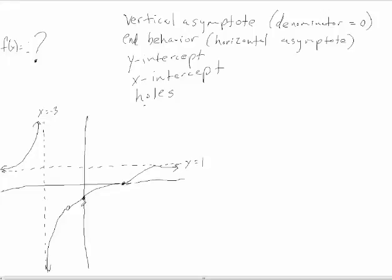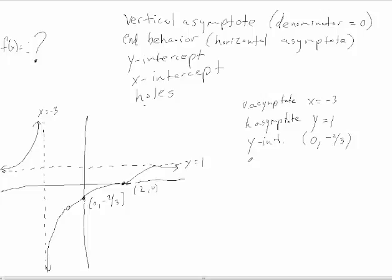Assuming this is a smooth curve through the plotted points, we have: vertical asymptote at x = −3, horizontal asymptote at y = 1, y-intercept at (0, −2/3), x-intercept at (2, 0), and a hole at the point (−1, −3/2).